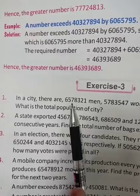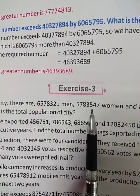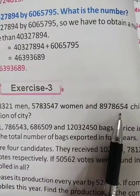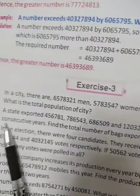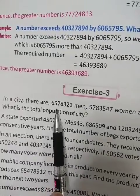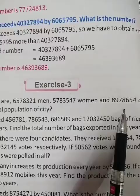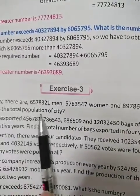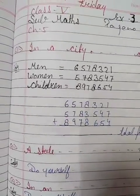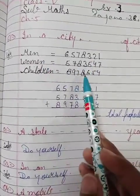In our city there are 6,578,321 men and 5,783,547 women and 8,978,654 children. So what is the total population of this city? Friends, there are this many men, this many women, and this many children. You have to find the total population of this city. Here you will write men in digits, women in digits, children in digits.